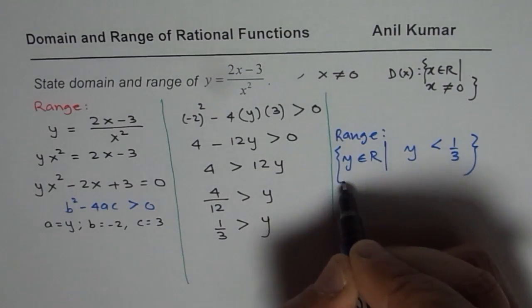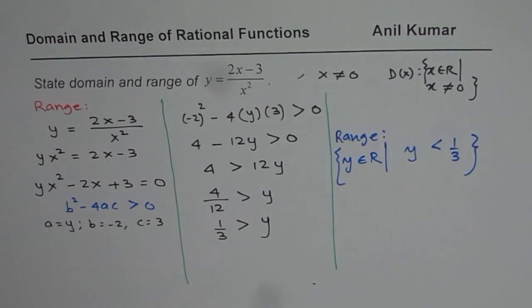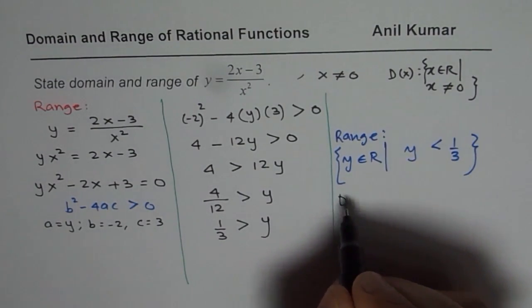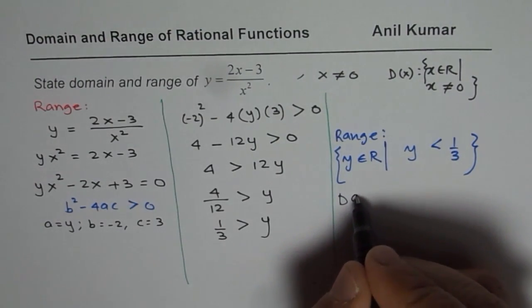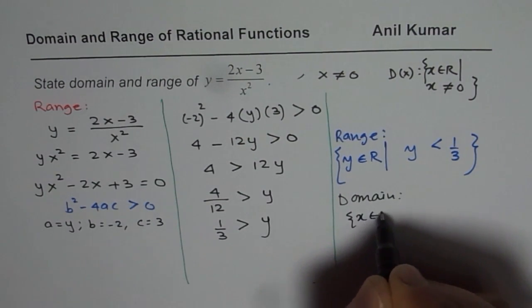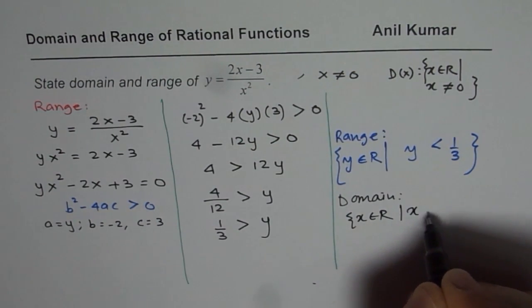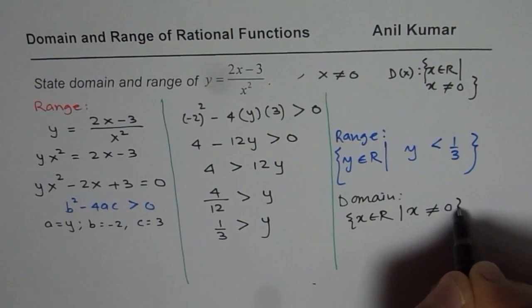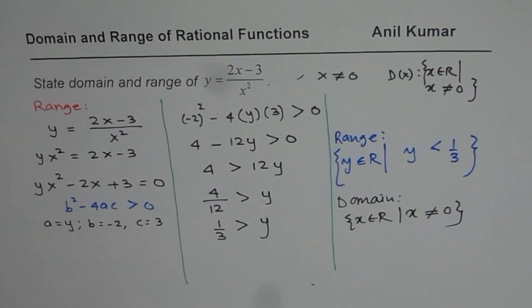We have already written the domain. The domain is from this function itself. We can say domain is x belongs to real numbers such that x is not equal to 0. So that is how we can get the domain and range of a rational function like this. I hope that helps you.